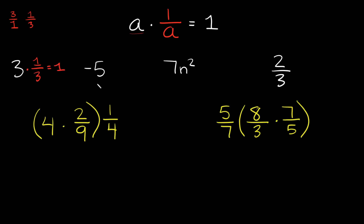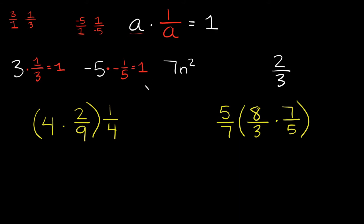Another example: here we have negative 5. What's the reciprocal of negative 5? Well, that would be negative 1 fifth, because negative 5 written as a fraction is negative 5 over 1, and if you flip it you get 1 over negative 5, or negative 1 fifth. So if you have a number and multiply it by its reciprocal, your answer is equal to 1.